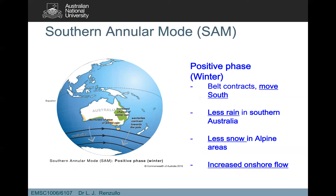So we characterise the belt of westerly winds through the Southern Annular Mode — the SAM index, also called the Antarctic Oscillation. During a positive phase of SAM in wintertime — when those westerlies are expected to be closer to the Australian continent because the subtropical ridge has moved further north — the belts contract and move further south. This gives you less rain in Australia and less snow in the Alps, but it does increase onshore flows.